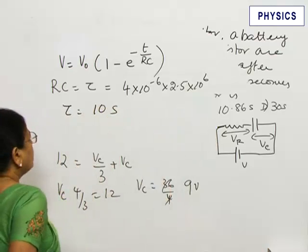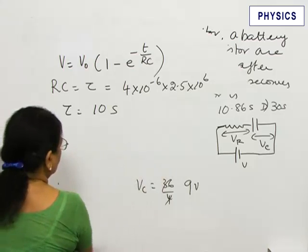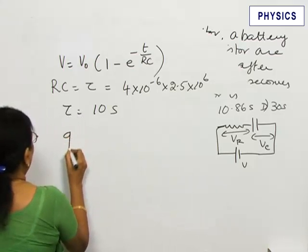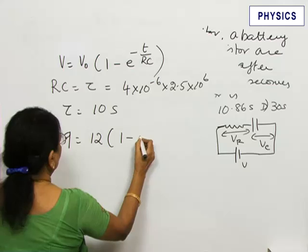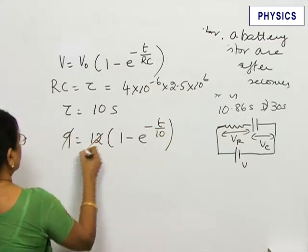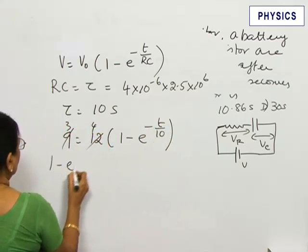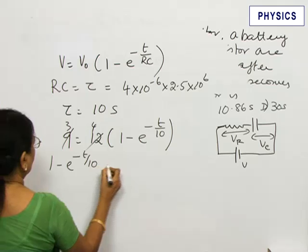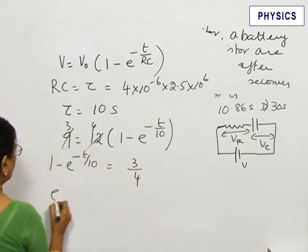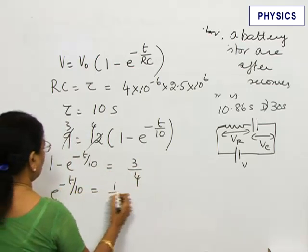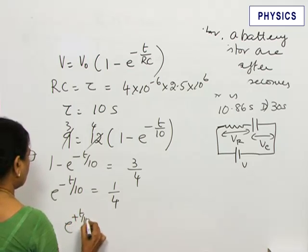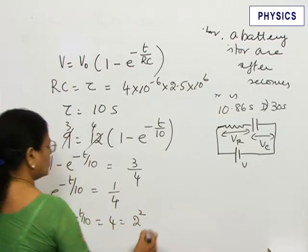Substituting for V and V₀. V₀ is 12 volt and this is 9 volt. 9 equals 12 into (1 - e^(-t/10)). This becomes 1 - e^(-t/10) equals 3/4 or e^(-t/10) equals 1/4 or e^(t/10) equals 4 which you can write as 2 squared.